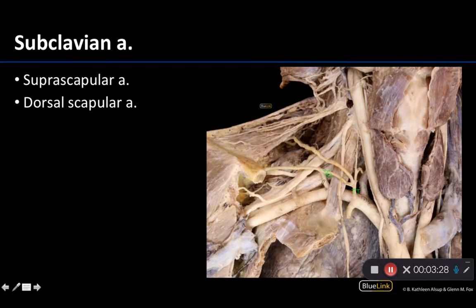The other branch is right here — this is your dorsal scapular. It is typically in the third part of the subclavian, and that makes sense. If this is the anterior scalene, lateral to the anterior scalene there's only one branch, which is the dorsal scapular. The thyrocervical trunk is on the first part, medial to the anterior scalene. So suprascapular and dorsal scapular we'll see again when we're looking at the posterior scapula, but here is where they're actually coming off of the subclavian artery.